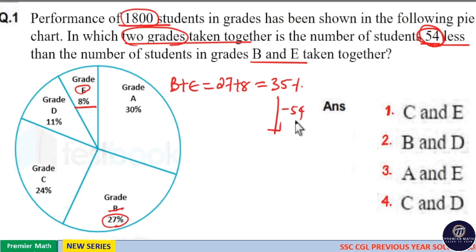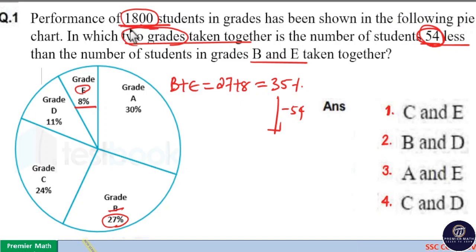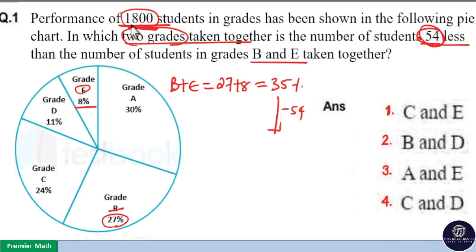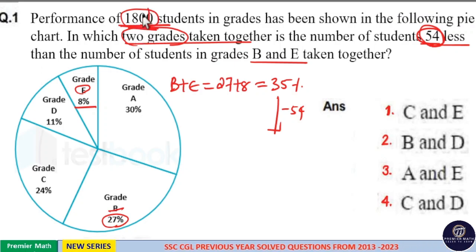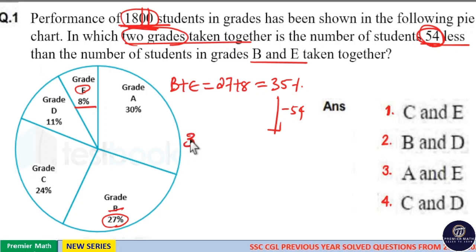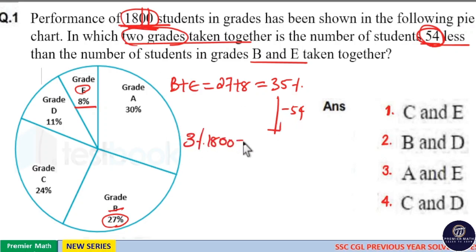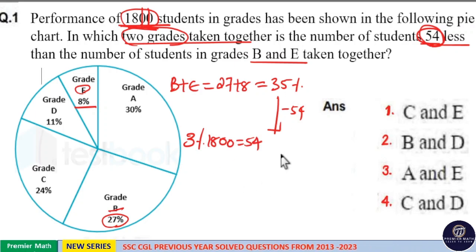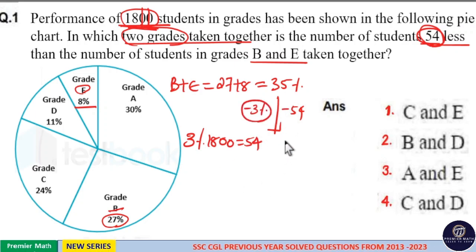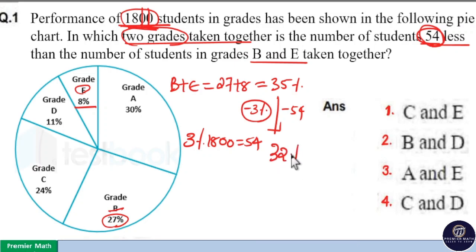54 less means we should find 54 is how much percentage of 1800. Here, 100 percentage of 1800 is 1800, 10 percentage is 180, 1 percentage is 18, and 18 into 3 is 54. So, 3 percentage of 1800 is 54, which means we need 35 minus 3 percentage, that is equal to 32 percentage.